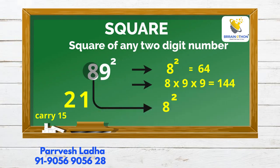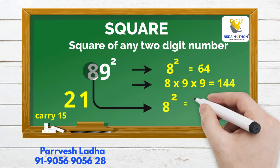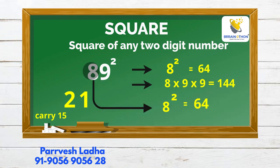Next step, we square the tens digit number, 8, which equals 64.